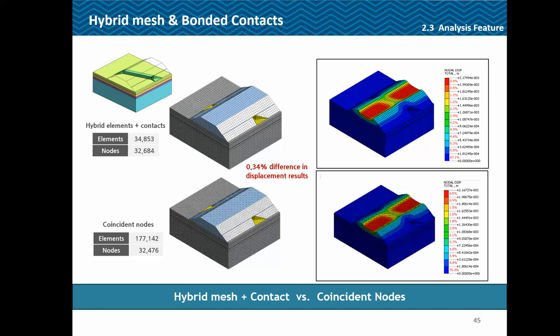In another model, using hybrid elements the number of elements was around 35,000 and nodes around 32,600. Going for a coincident node model instead, the number of nodes remains comparable at 32,476 but the number of elements is almost 6 times higher. The difference in result was just 0.3–4%, so the number of elements is drastically reduced when using the hybrid element and contact approach.